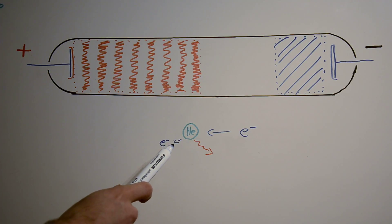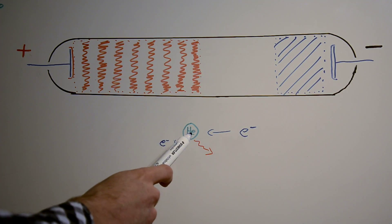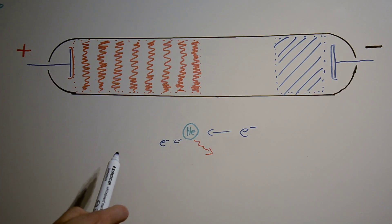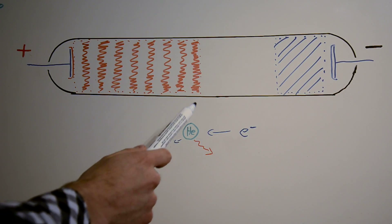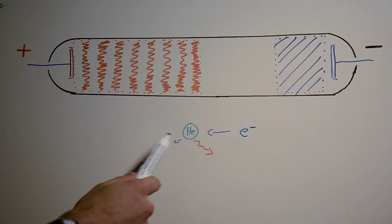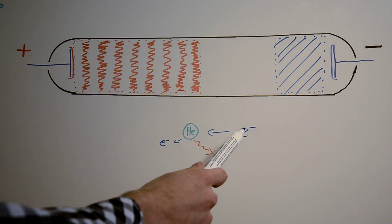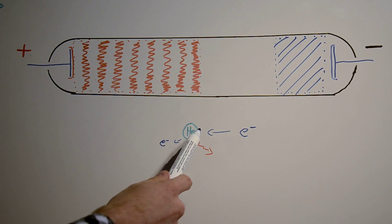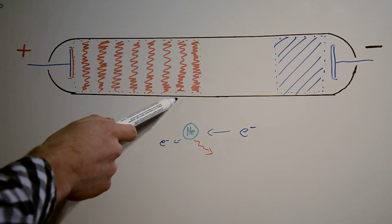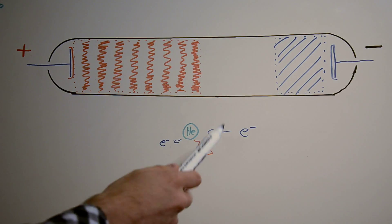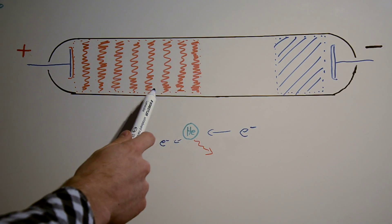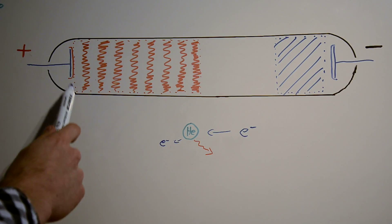After the electron slows down it doesn't have enough energy to excite another atom, so we get a dark layer. Then the electric field in the tube accelerates the electron again, and when it has enough energy to excite another atom we get a glowing layer again. This phenomenon repeats again and again until the electrons reach the anode.